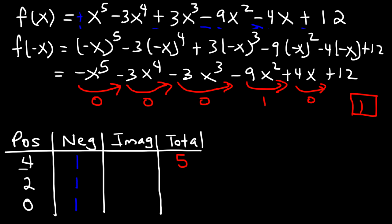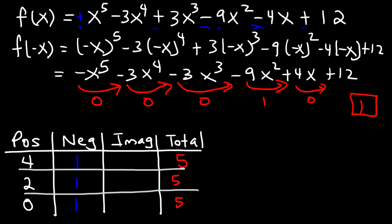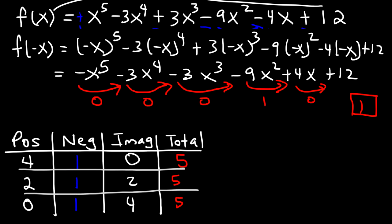Now we can determine the number of imaginary solutions. The total always remains 5. So: 4 + 1 = 5, giving 0 imaginary; 2 + 1 + 2 = 5, giving 2 imaginary; and 0 + 1 + 4 = 5, giving 4 imaginary. Those are the three possibilities. Now let's determine which one actually applies to this function.